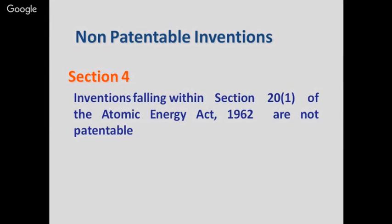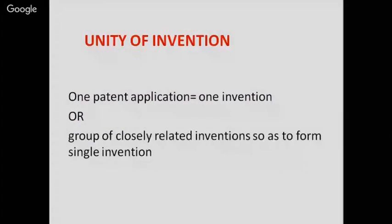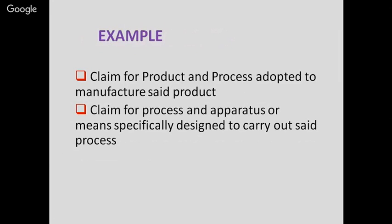The main aspect of unity of invention is that in one patent application we have one invention or a group of closely related inventions forming a single inventive concept. For example, a claim for a product and the processes adopted to manufacture that product, or a claim for processes and apparatus specifically designed to carry out a particular process.